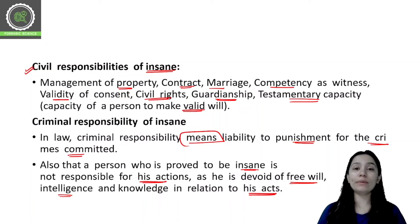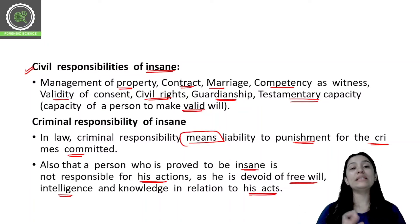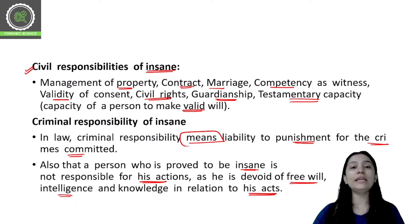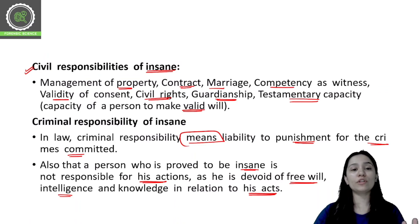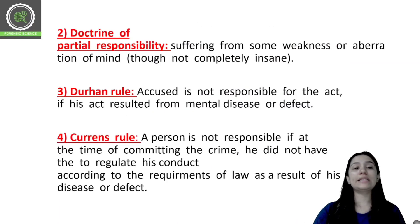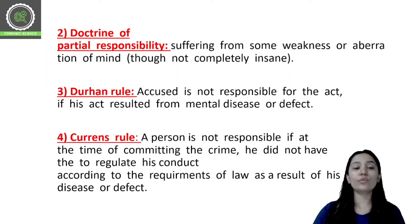If a person commits a criminal act while in a state of insanity, there are some rules through which we judge criminal responsibility. We judge by: McNaughton's rule, the doctrine of partial responsibility, the Durham rule, and Curren's rule.